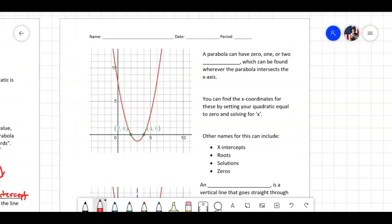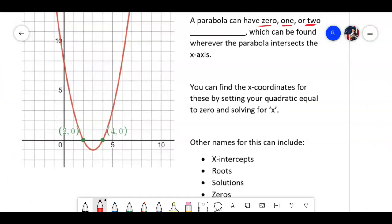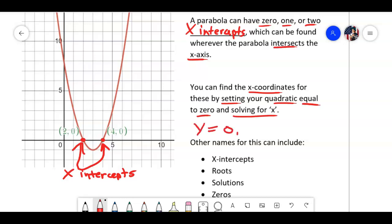Now, you can skip that over, and we learned about vertex, max and min, y-intercepts, and now we're going to the back. A parabola can have 0, 1, or 2, and we call them x-intercepts, which can be found where it crosses the x-axis. How many x-intercepts do you see in the picture? Two. There's two of them. So what are the values of the x-intercepts? 2 comma 0, 4 comma 0. Very good. It says you can find the x-coordinate by setting your quadratic equal to 0 and solving for x. Another way is y equals 0, what is x? That's another way to tell x-intercepts.